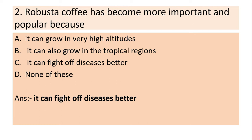Robusta coffee has become more important and popular because — it can grow in very high altitudes; it can also grow in tropical regions; it can fight off diseases better; or none of the above. Answer: It can fight off diseases better.